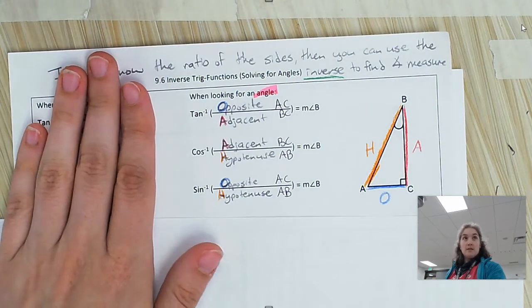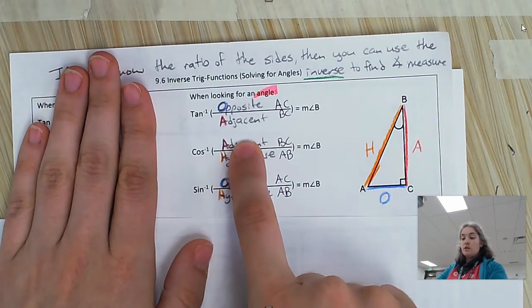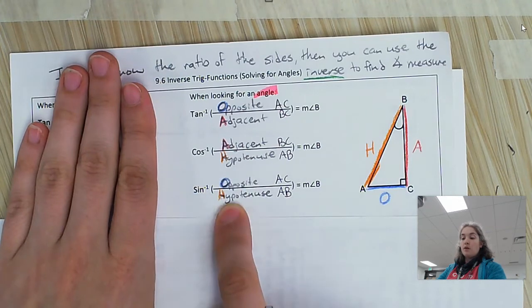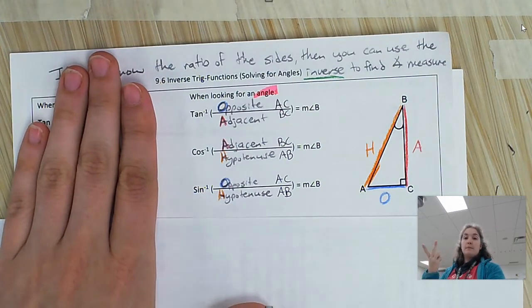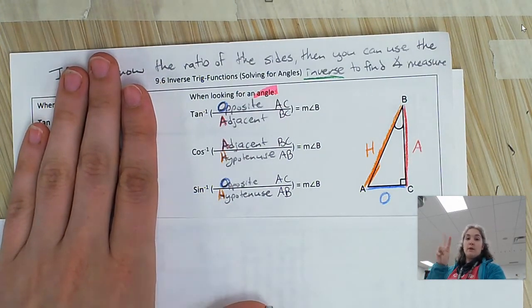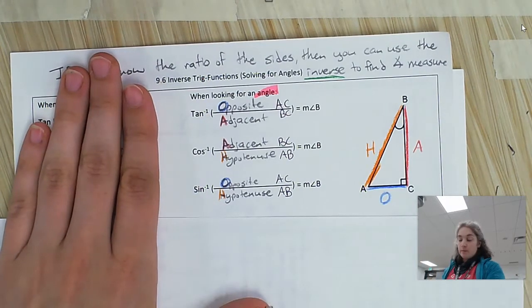So we're going to practice some of these. Cosine is still adjacent over hypotenuse. Sine is still opposite over hypotenuse. The inverse just flips where the angle is and where the ratio is. It just flips it, and it looks it up for you. That's all it does.